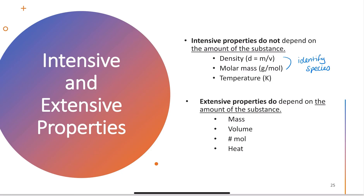Extensive properties are dependent upon the amount of substance present. That includes things like mass, volume, number of moles, and heat. If I have more of something, it's going to weigh more and have a larger volume. Number of moles correlates to the number of things you have.